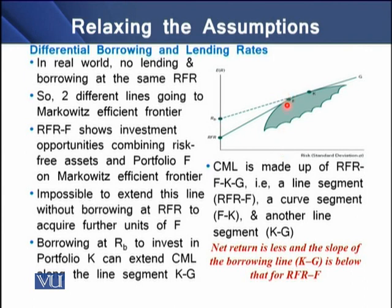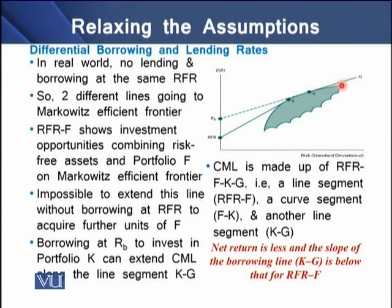In order to get more units of F, we need to borrow some amount at the rate RB in order to invest in portfolio K, so that we can extend our CML along the line segment KG. This means that the CML is now made up of RFR, K, and G — that is, a line segment RFR-F, a curved segment FK, and another line segment KG, which is possible due to additional borrowing at RB.